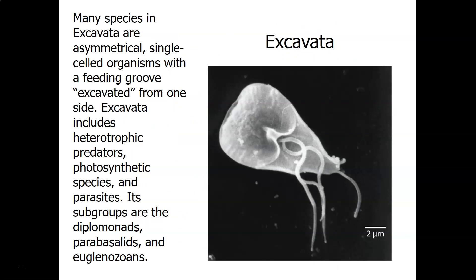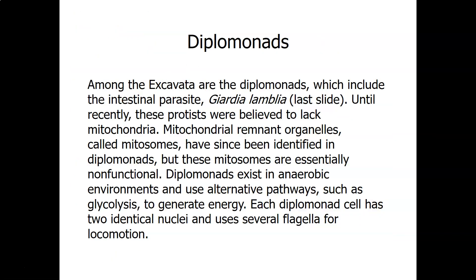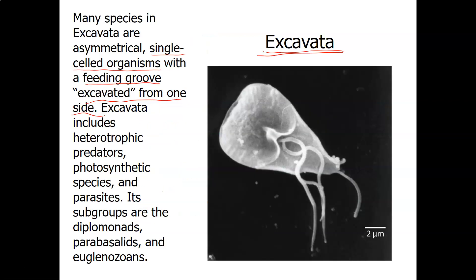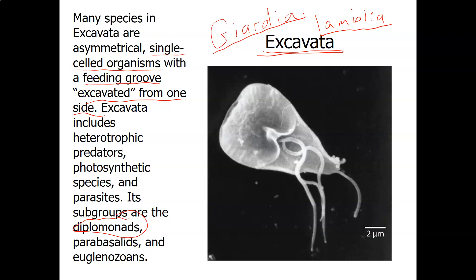First we'll start with the supergroup Excavata. All the members of the Excavata are in the Kingdom Protista. They are named because they all have a feeding groove that's excavated from one side — that's where their name comes from. They're single-celled, so they're unicellular. Some of the Excavata are predators, some are photosynthetic, and some are parasites. The subgroups are the diplomonads, the parabasalids, and the euglenozoans. What you're looking at here is a diplomonad called Giardia lamblia — using correct scientific naming, we underline that because it's the genus and species name.